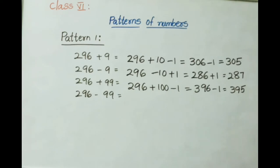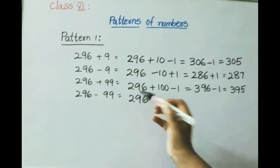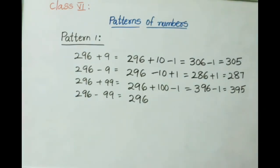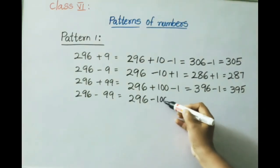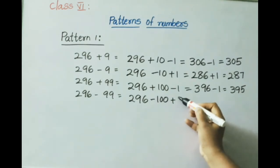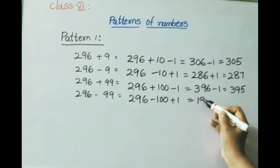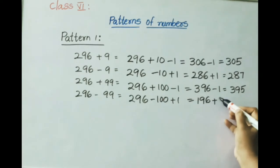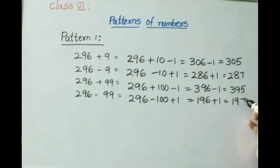Next pattern: 296 minus 99. We write minus 99 as minus 100 plus 1. So 296 minus 100 equals 196, plus 1 gives 197. The answer is 197.